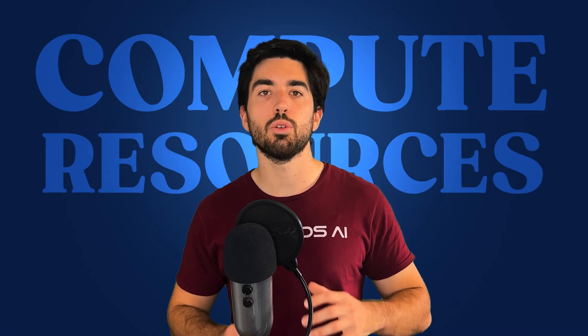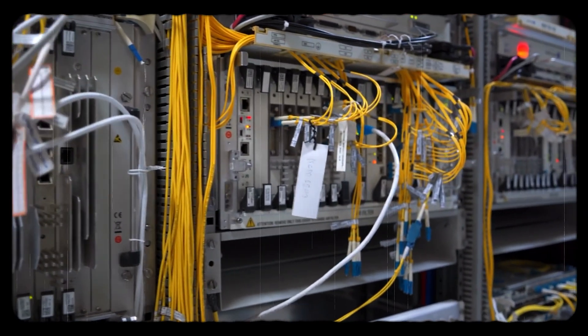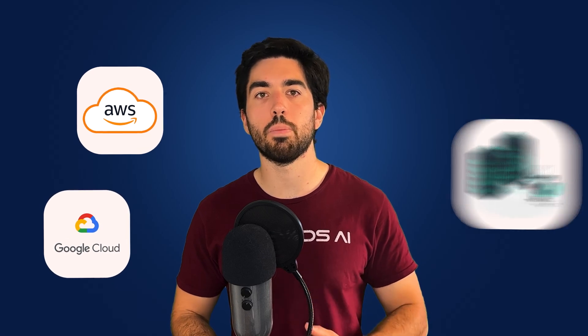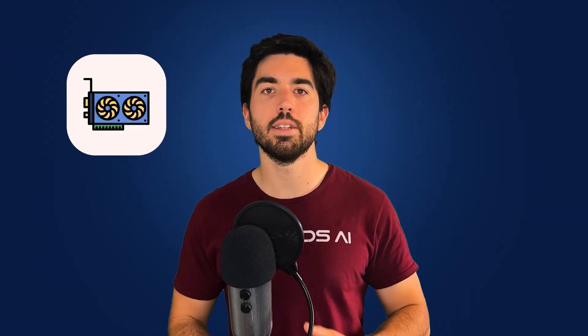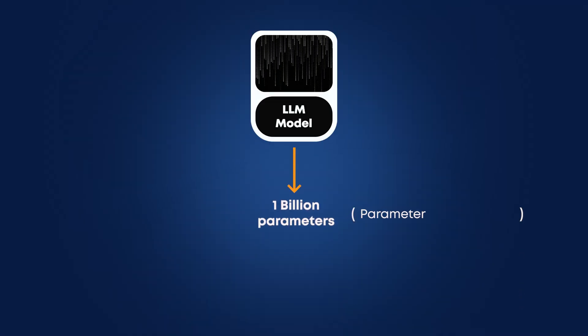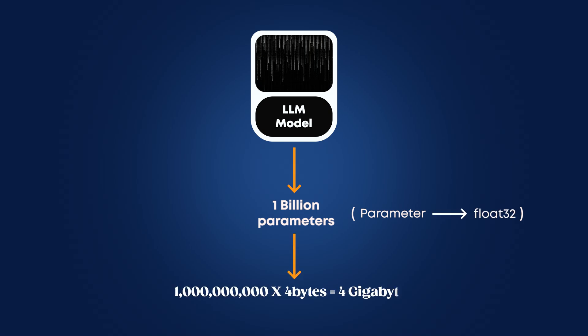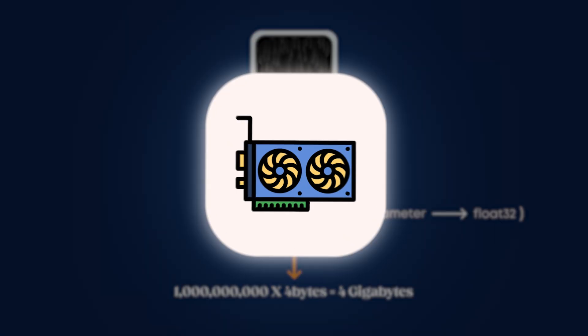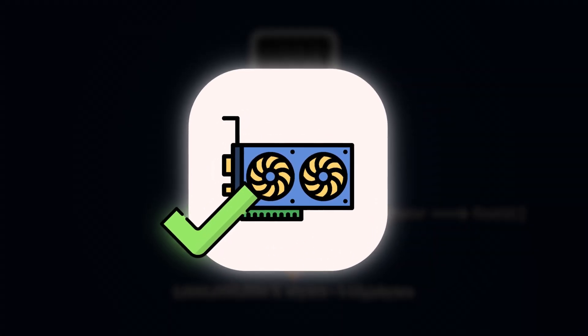Here are a few challenges to look out for and tips we gathered for you. First, compute resources: LLMs demand high computational power. Ensure you have the necessary infrastructure, whether it's cloud-based solutions with AWS or Google Cloud or powerful local servers. For smaller LLMs, a standard GPU can suffice. Indeed, an LLM with 1 billion parameters where each parameter is stored as float32 requires 1 billion times 4 bytes, which is 4 GB of memory for inference — which is fine for lower-end GPUs.